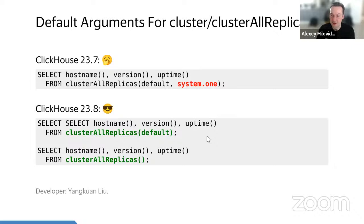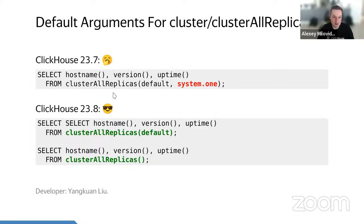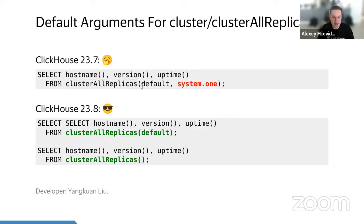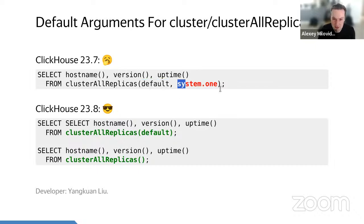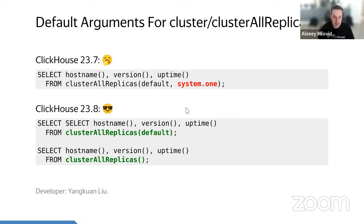Another uninteresting feature is about the cluster and clusterAllReplicas table function. In ClickHouse you can create a distributed table and query your cluster as a single table. If you don't want to create a distributed table explicitly, you can use table functions such as remote, remoteSecure, cluster, and clusterAllReplicas. The clusterAllReplicas function takes the cluster name and a table name as arguments.